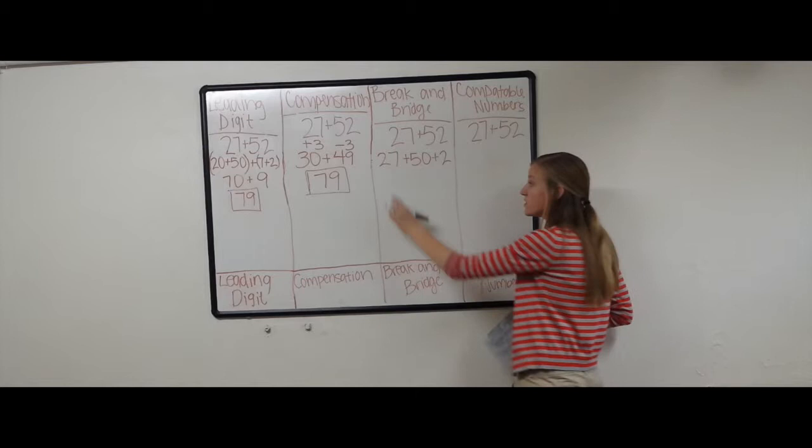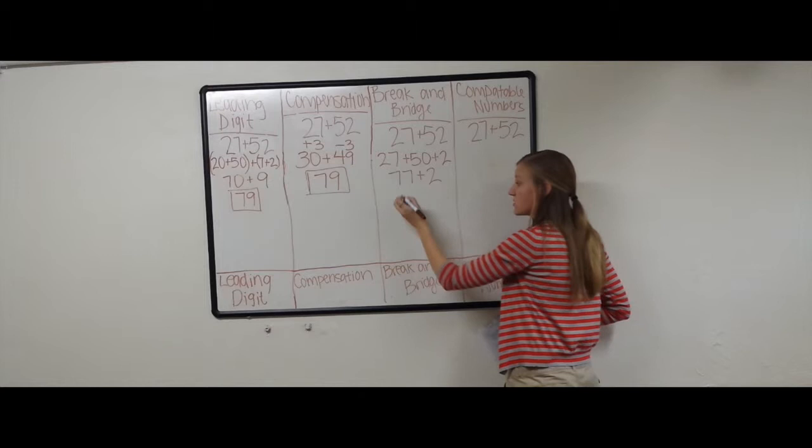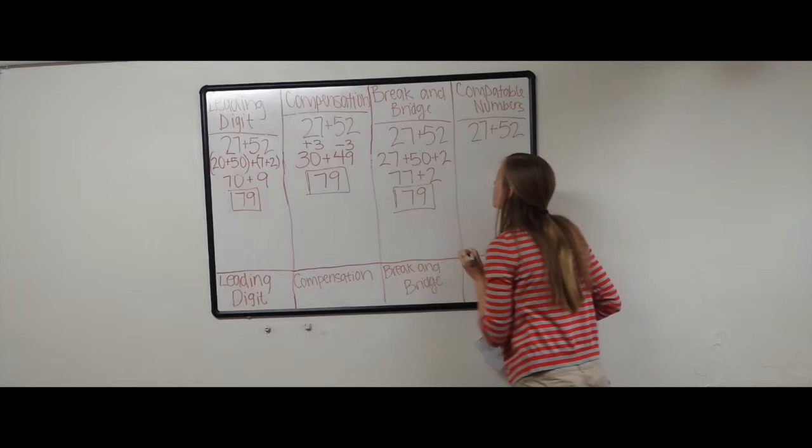So we'll leave our 27 and break apart the 52 into 50 and 2. To add up this problem, we'll add two numbers at a time to make it a little bit easier. So 27 plus 50 is 77. We can't forget about the 2, so 77 plus 2 is 79.